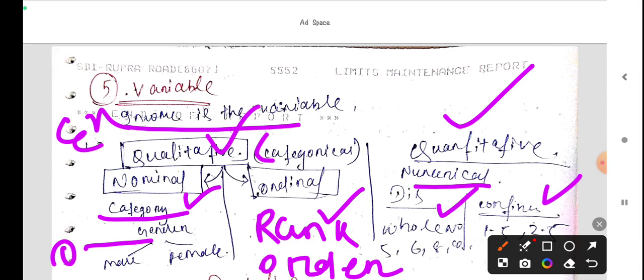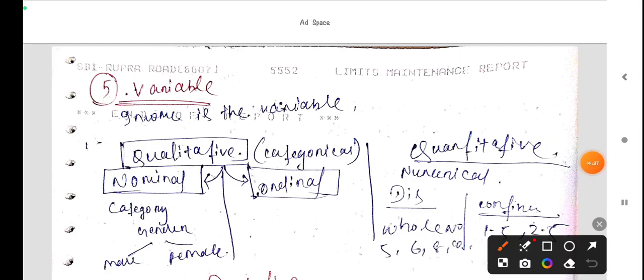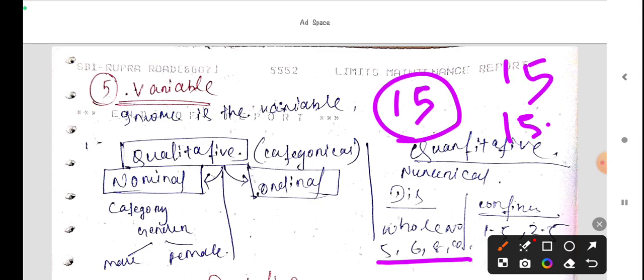Then quantitative, as we studied, one is discrete, another is continuous. Whole numbers like five, six, seven, eight, nine, ten, eleven, twelve, these are whole. And if we say fifteen, after fifteen is fifteen point five, then sixteen, sixteen point five. These come in decimals and points or fractions. This is continuous series.